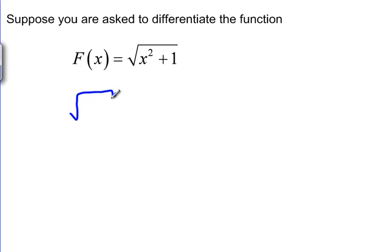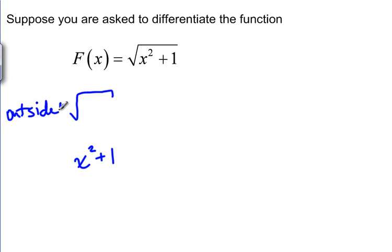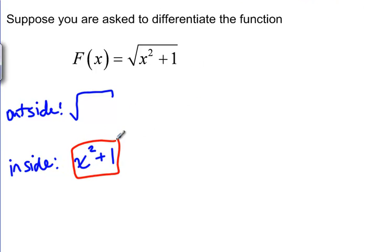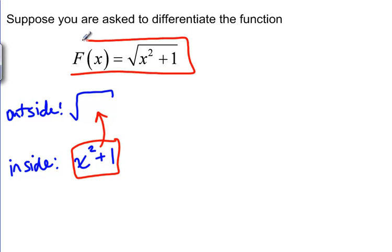Square root of something and X squared plus 1. We're going to call the square root the outside function and X squared plus 1 the inside function. If we compose these two functions — if we take X squared plus 1 and plug it into the square root — we get back our original function.